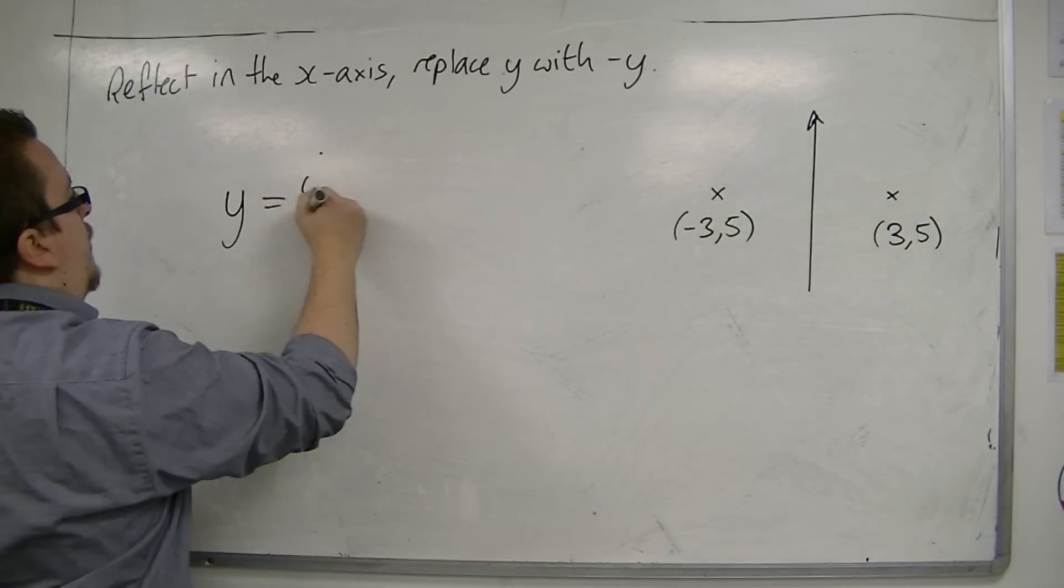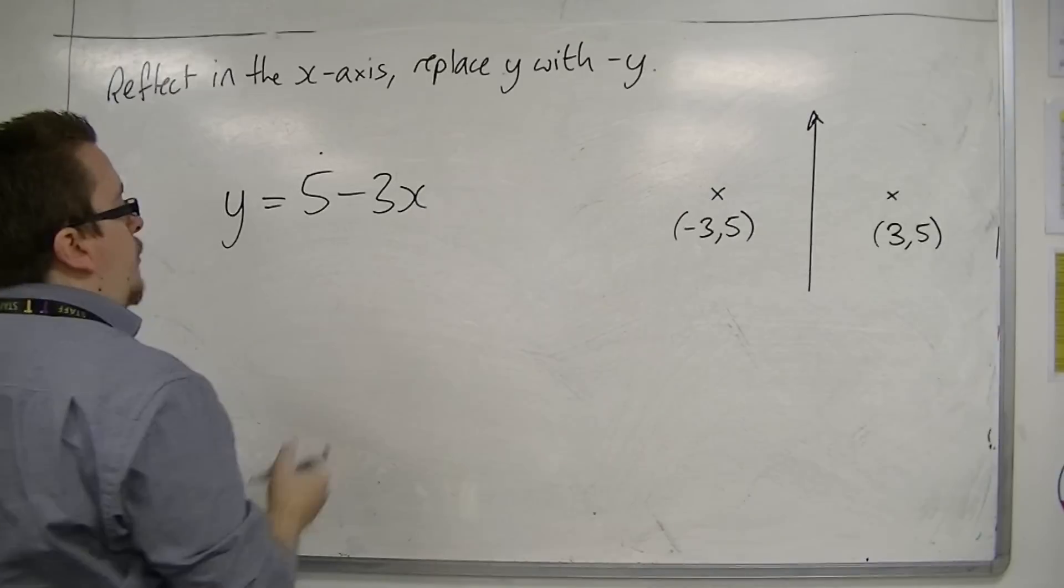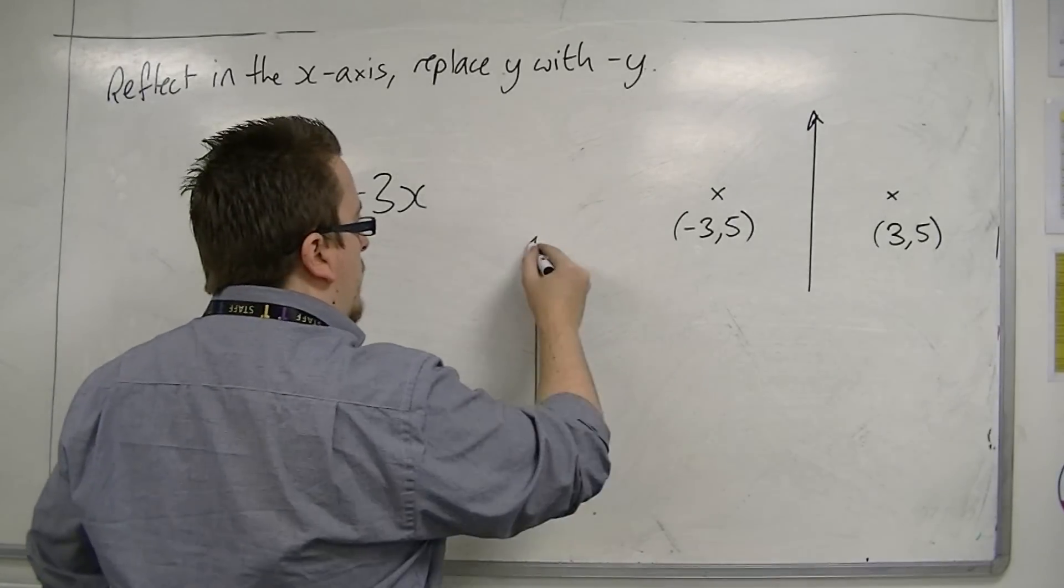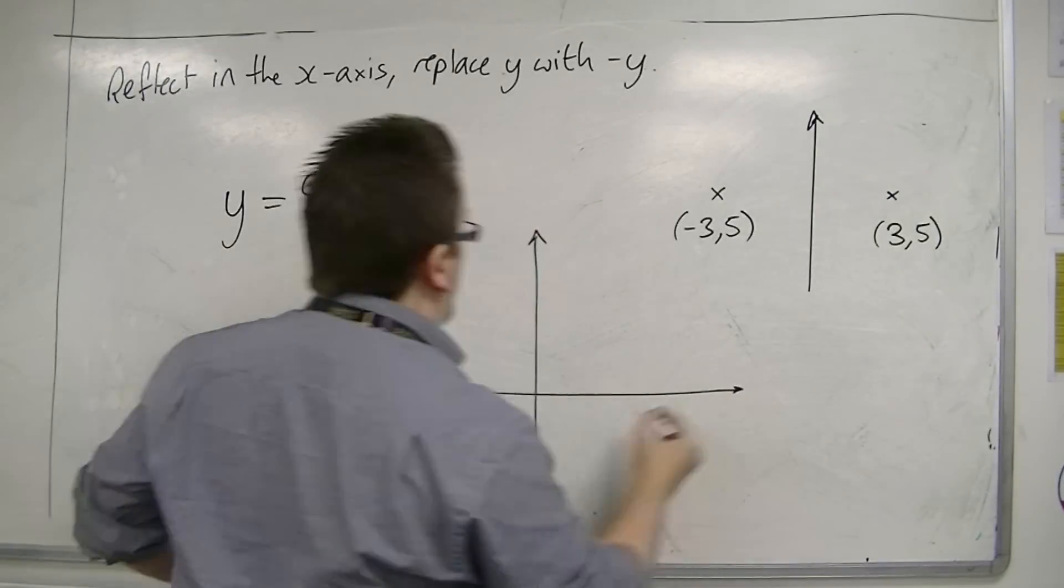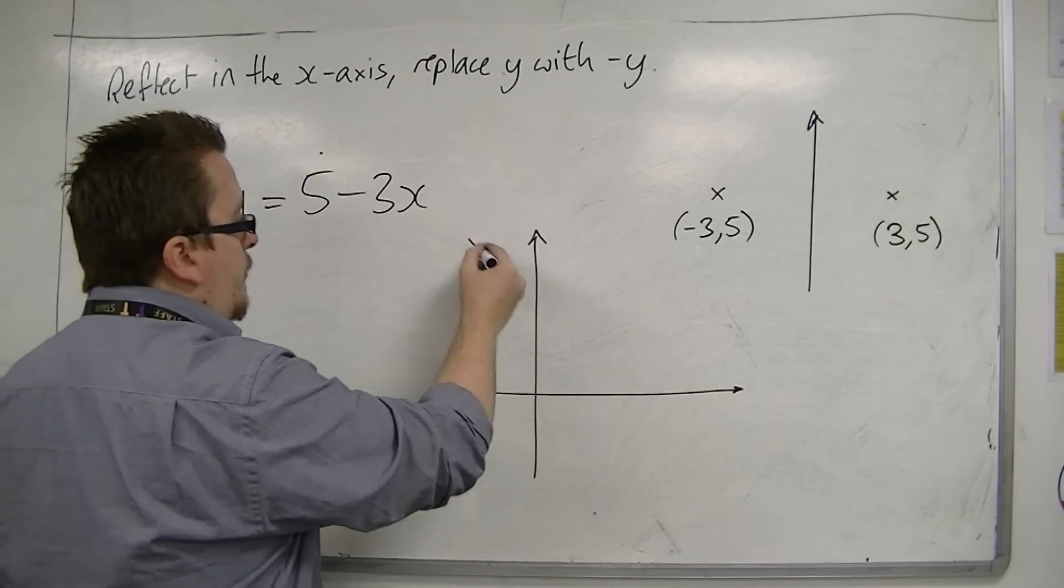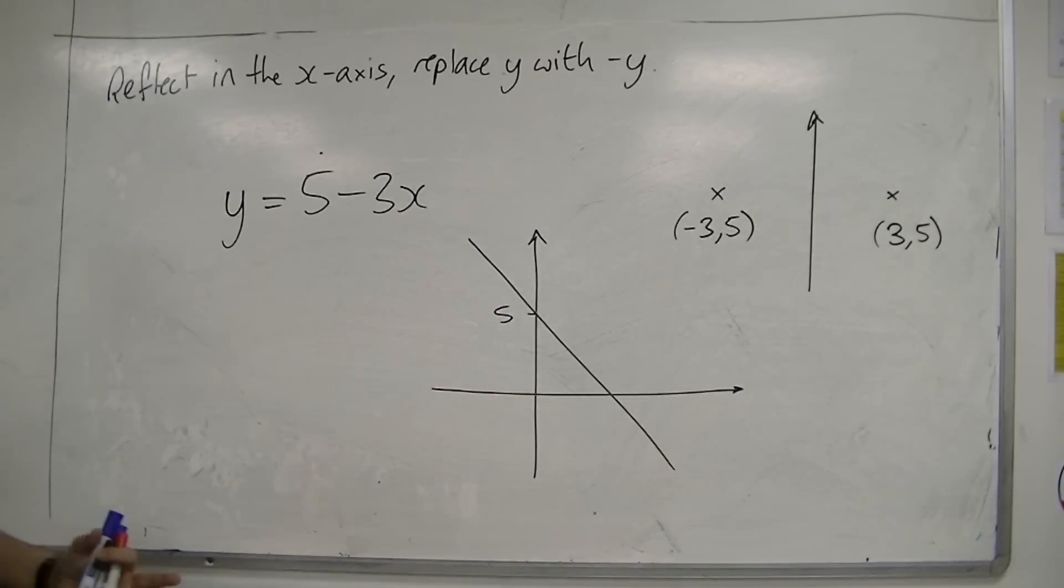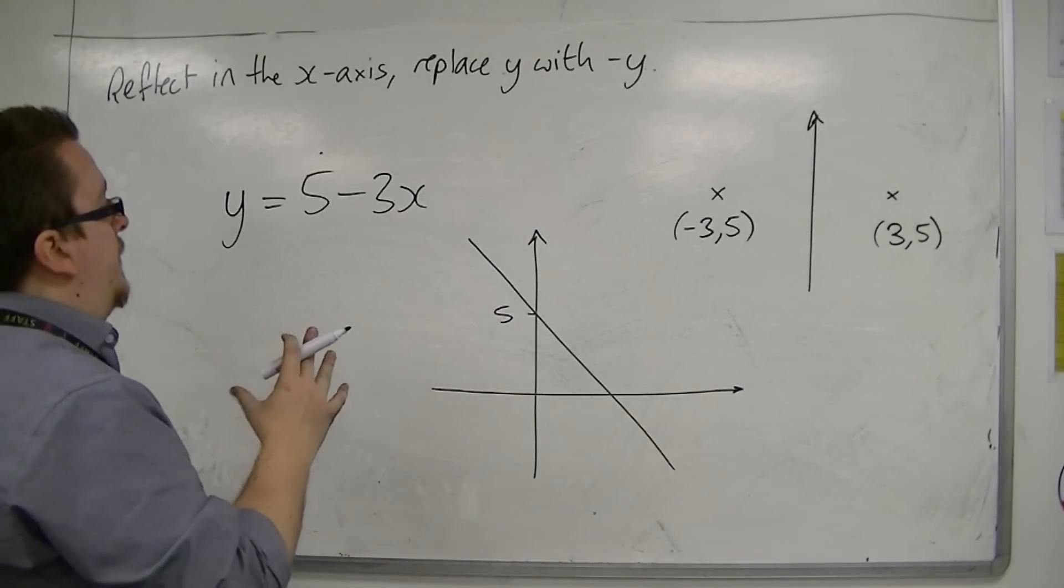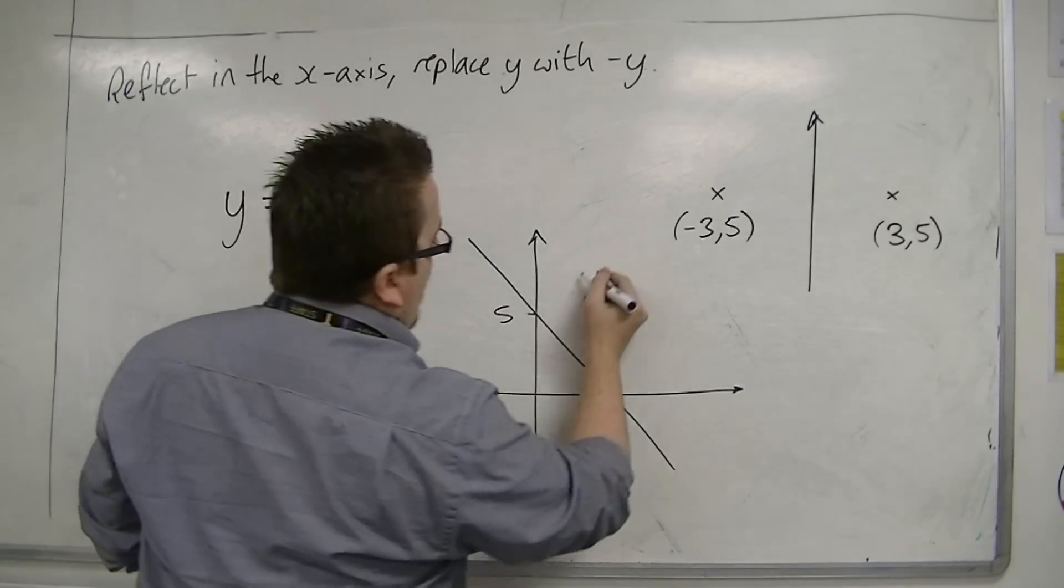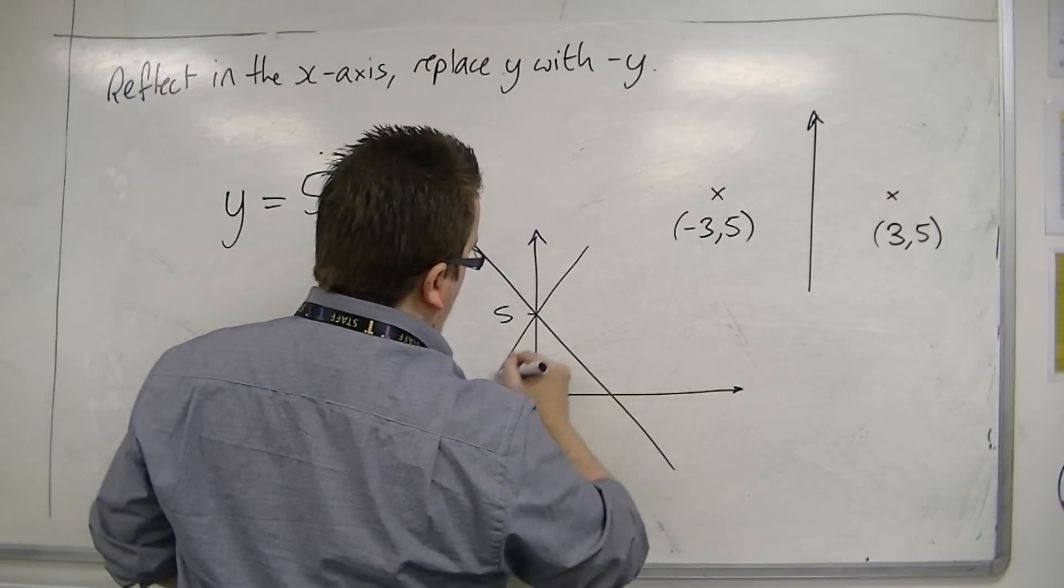If we look at y = 5 - 3x, as we did before. 5 - 3x would look something like this. And I now reflect this in the y-axis, then the actual line will look something like this.